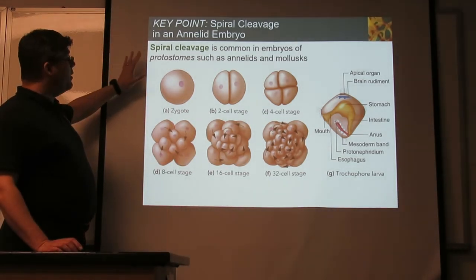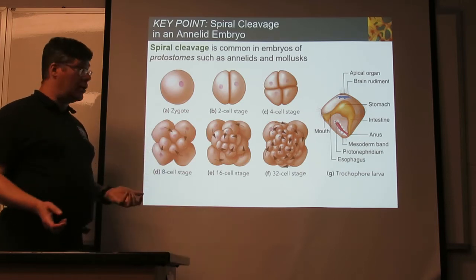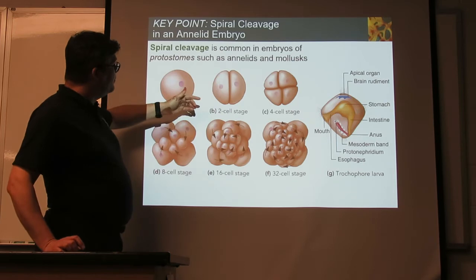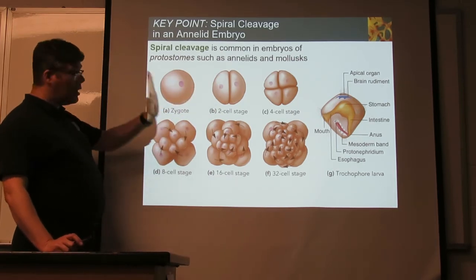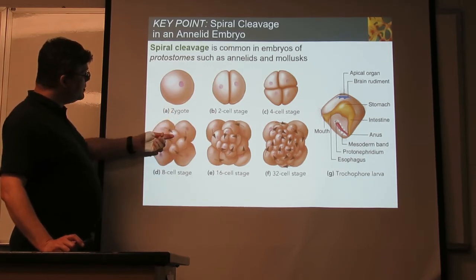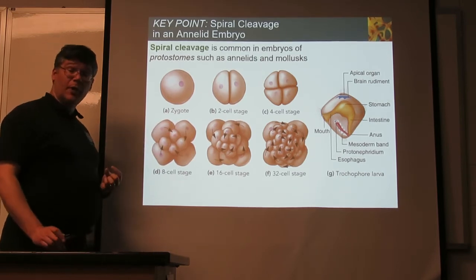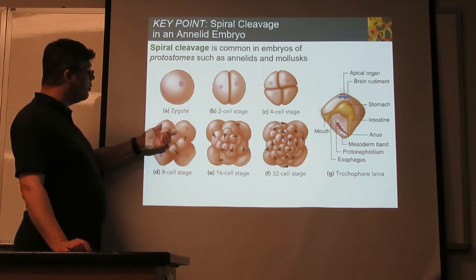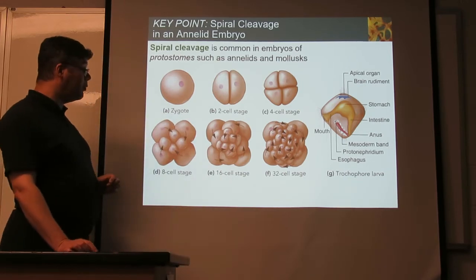Now we have spiral cleavage, and this is typical of the protostomes. Spiral cleavage: by the time we get to eight cells, things are very obviously different, and it's not a straight line through the whole thing. Instead, these cells are kind of going off to the side from the cell that they form from — that's where the spiral name comes from. And so you get kind of a spiral look to our developing embryo here.